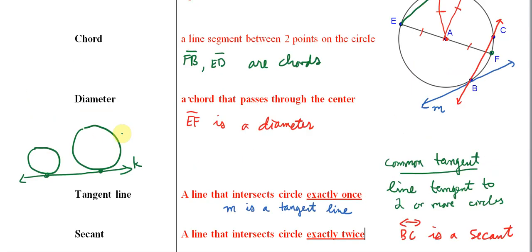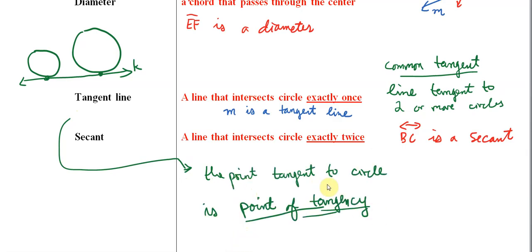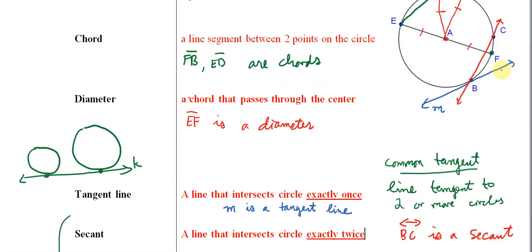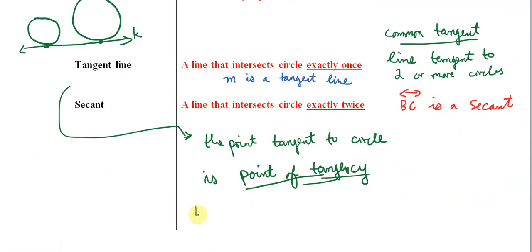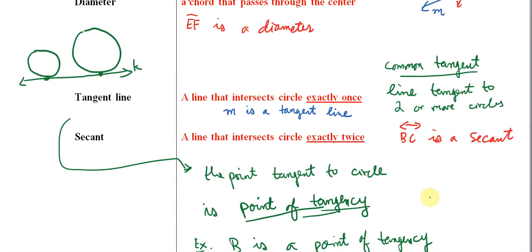One more thing relating to the tangent line: the point where the line is tangent to the circle is called the point of tangency. Looking at this picture, line M is tangent to the circle at B. So we can say that B, in our example, is a point of tangency. All these phrases — common tangent, tangent, point of tangency — are all related to each other.